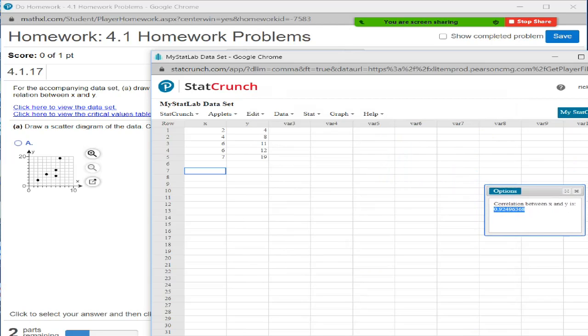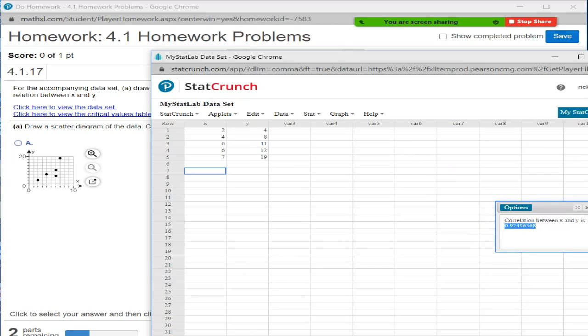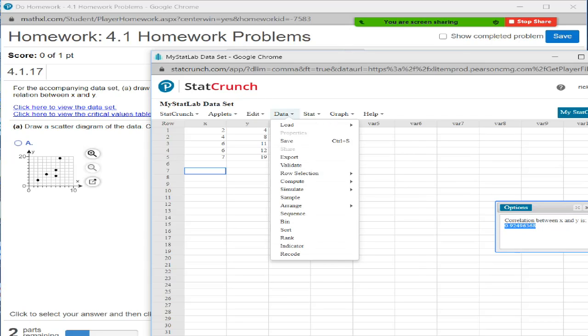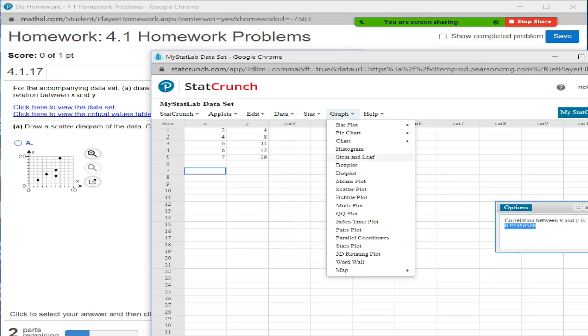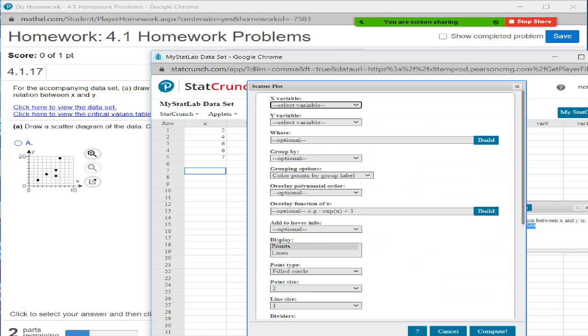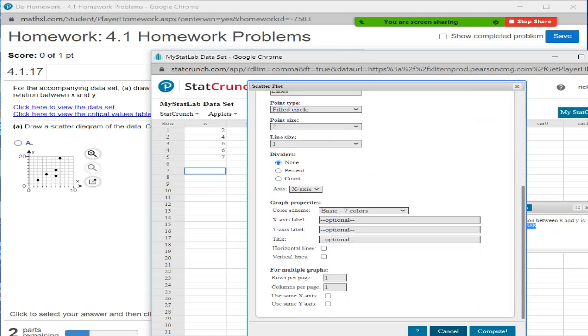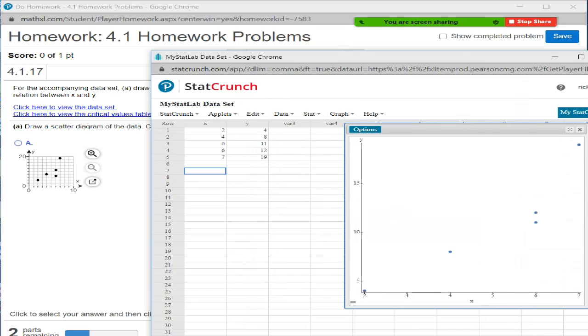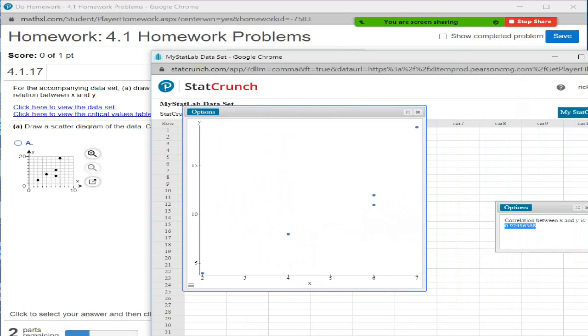So let's just kind of store that away for a minute. That's the correlation. They also want to draw a scatterplot diagram. So instead of doing that by hand, I can go to graph and a scatterplot diagram. And the X variable is going to be the X, and the Y variable is going to be the Y. And I can pretty much leave everything else alone. I don't have to set a lot of these. There's a whole bunch of options here, but just say compute. And here's my scatterplot diagram.